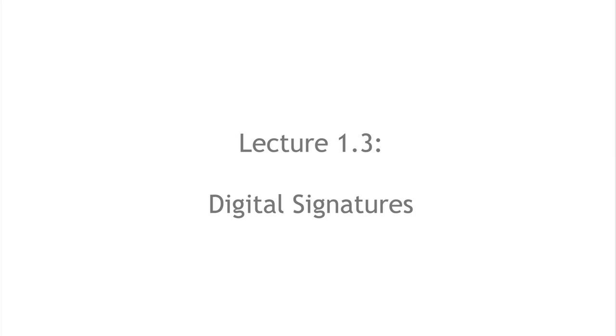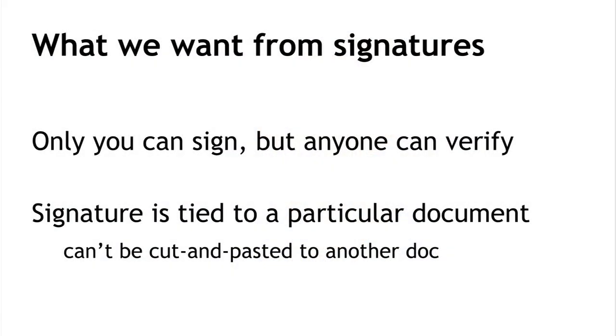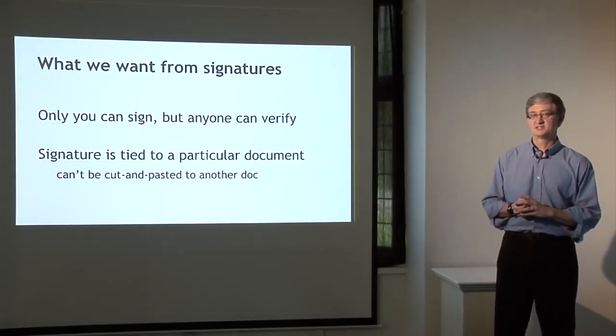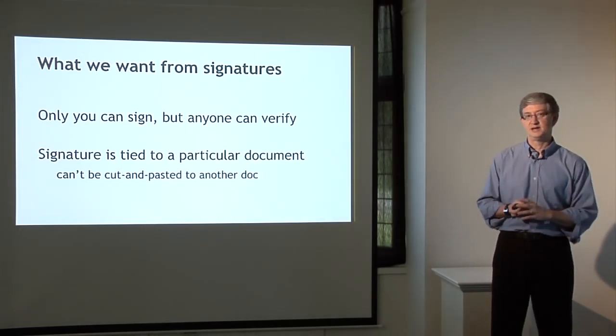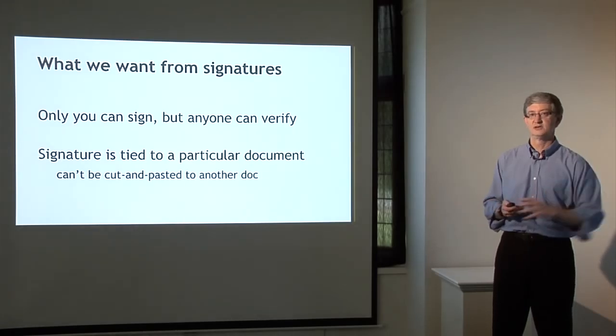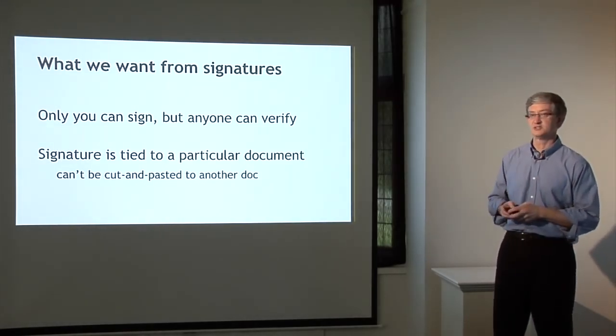In segment 1.3, we'll talk about digital signatures — the second cryptographic primitive along with hash functions needed for cryptocurrencies. A digital signature is like a signature on paper but in digital form. What we want: only you can make your signature but anyone can verify it's valid, and the signature is tied to a particular document so it can't be cut and pasted onto another one.